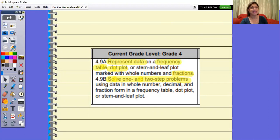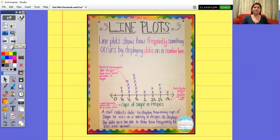So let's take a look at how we can solve problems. This is 4.9a. First of all, let's talk about this dot plot. A dot plot shows how frequently something occurs, and it's displaying the data on a number line. A dot plot is also called a line plot, and that's what it says here.